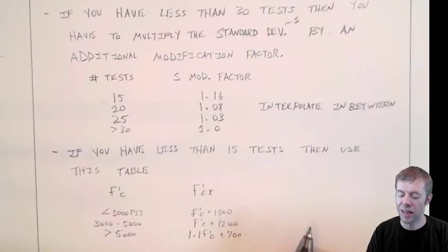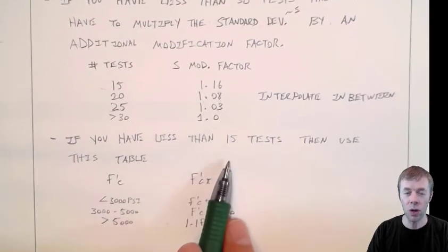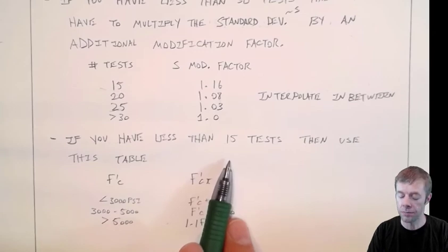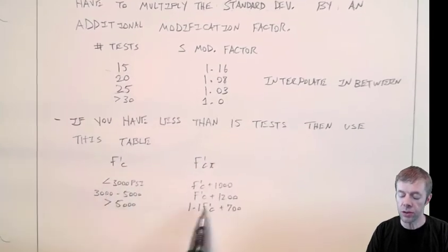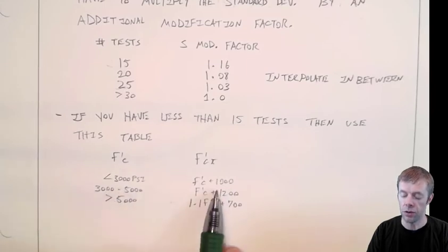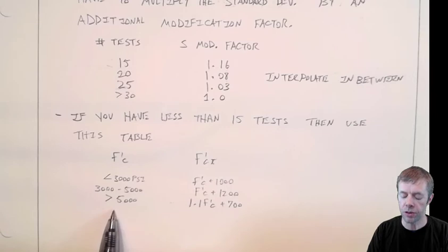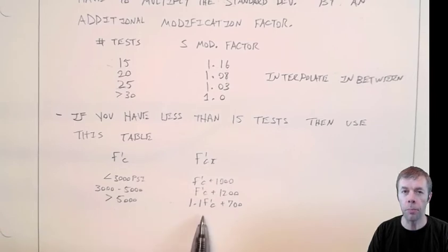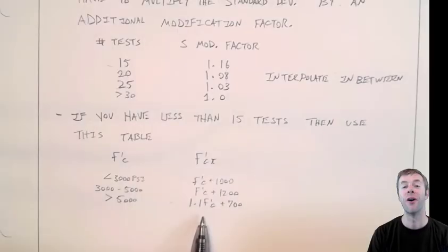Now, let's say you have less than 15 tests. You don't know much, you're just getting started. Then you're going to use these equations. If your F'C is less than 3,000 psi, you'll use this one. 3,000 to 5,000, you'll take your design strength plus 1,200 psi. And if your F'C is greater than 5,000 psi, you'll use 1.1 times F'C plus 700 psi.